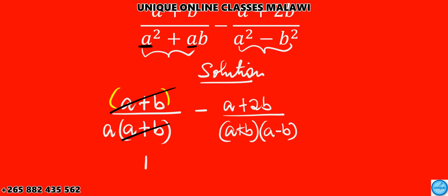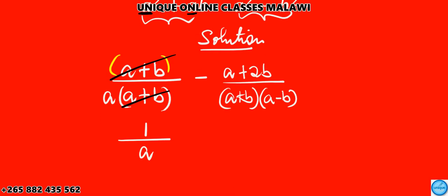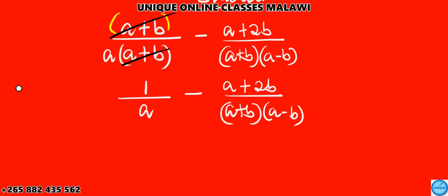We have 1 divided by a, then minus a plus 2b over a plus b times a minus b. Next, what we need to do is find a common denominator, so we need to find what to multiply. We have a in the bracket, a plus b, and another one, a minus b.